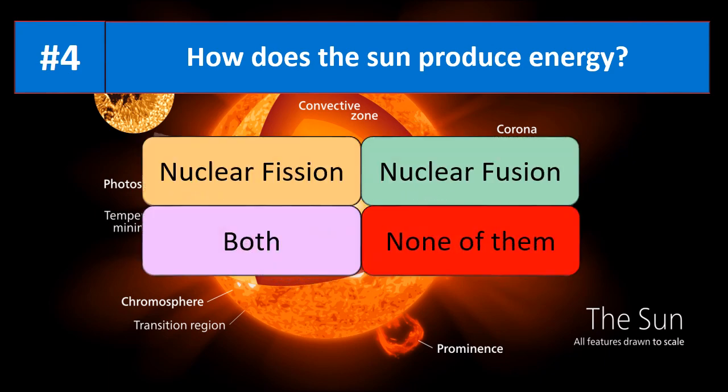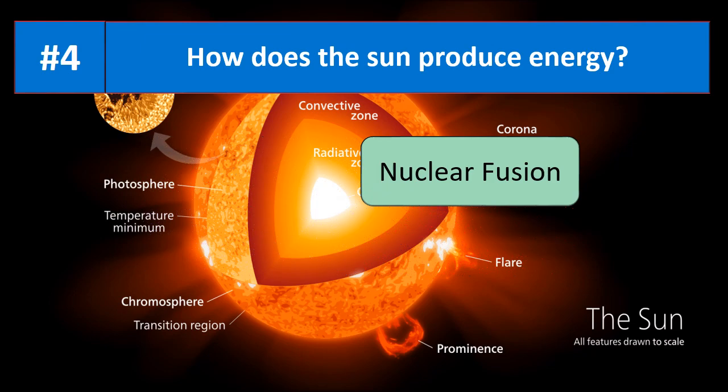Question number four: how does the sun produce energy? Is it due to nuclear fission, fusion, both, or none of them? Fusion is the right answer — the sun produces energy due to nuclear fusion.